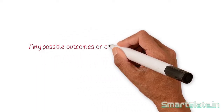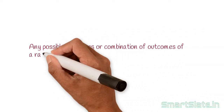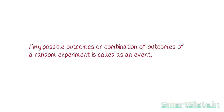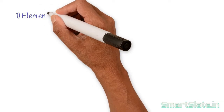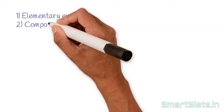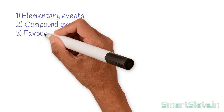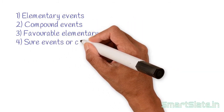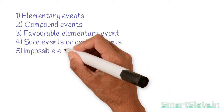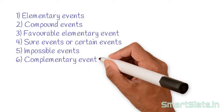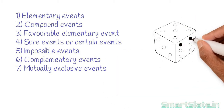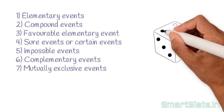Any possible outcome or combination of outcomes of a random experiment is called an event. There are several types of events: elementary events, compound events, favorable elementary events, certain events or sure events, impossible events, complementary events, and mutually exclusive events. I will explain each type using an example of throwing a die.